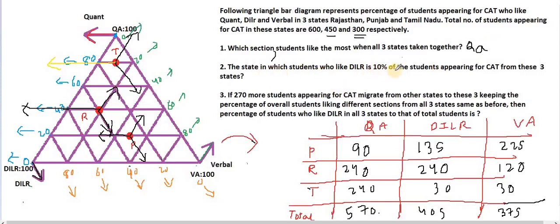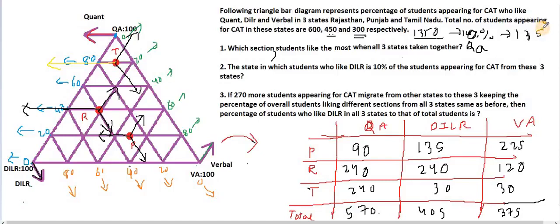The second question: the state in which students who like DILR is 10% of the students appearing for CAT from all three states. Total students appearing for CAT: 600 plus 450 plus 300 is 1350. 10% of 1350 is 135. Which state has 135 students liking DILR? That is Punjab. So the answer for the second question is Punjab.